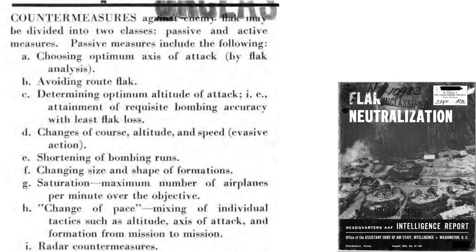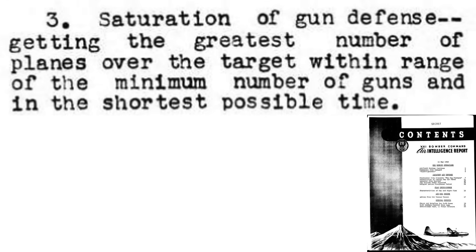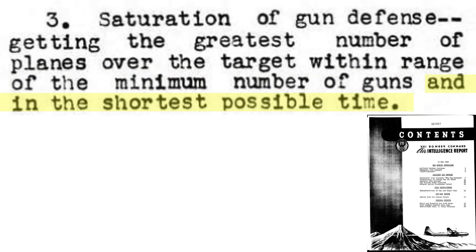This page from an August 1945 headquarters AAF intelligence report titled Flak Neutralization outlines steps bombers can take to reduce the threat from ground artillery flak. Item G lists saturation of the integrated air defense system. Saturation of the gun systems is defined on this page from a May 1945 21st Bomber Command Air Intelligence report: have the maximum number of bombers pass over the minimum number of firing flak batteries in the shortest time.